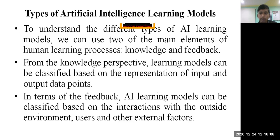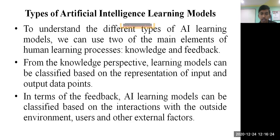If someone asks you what are the different types of artificial intelligence learning models, you need to say they are classified based on two important factors: one is based on knowledge, which can be given by a domain expert, and one is based on feedback from different models. Now let's understand the classification of machine learning systems using these two approaches.